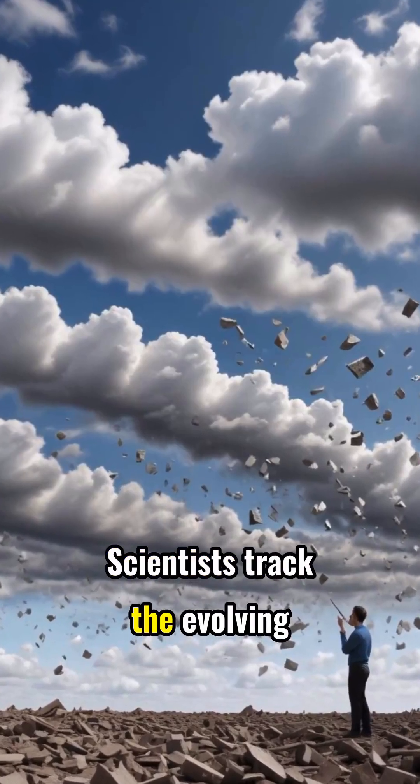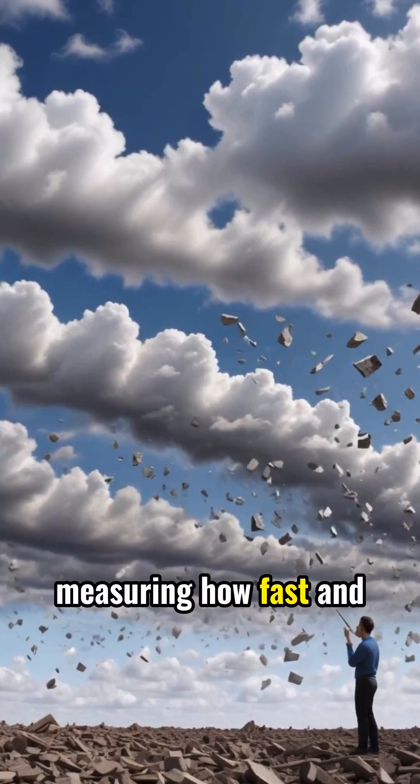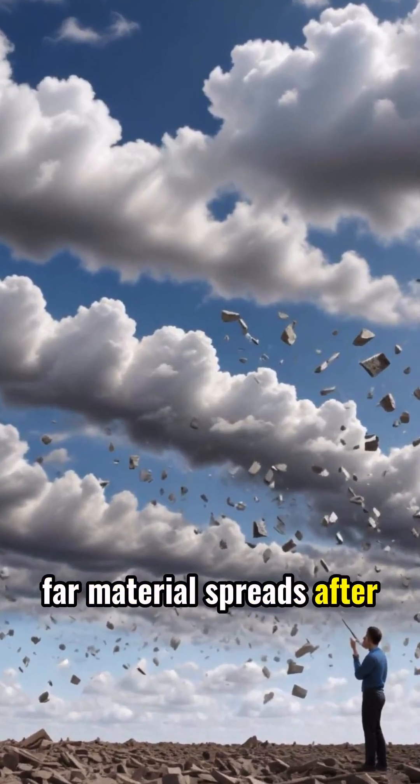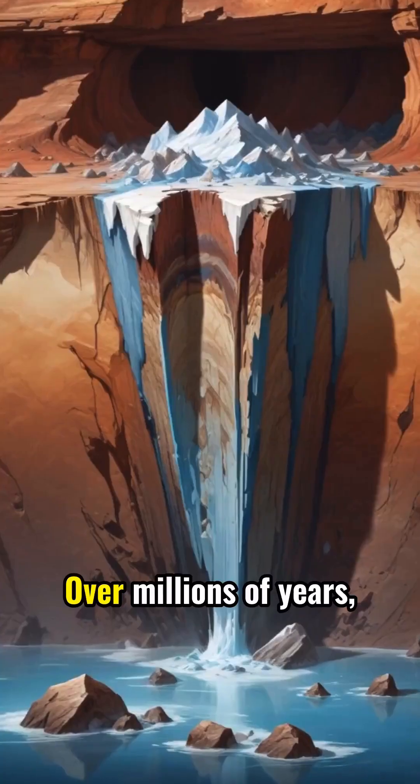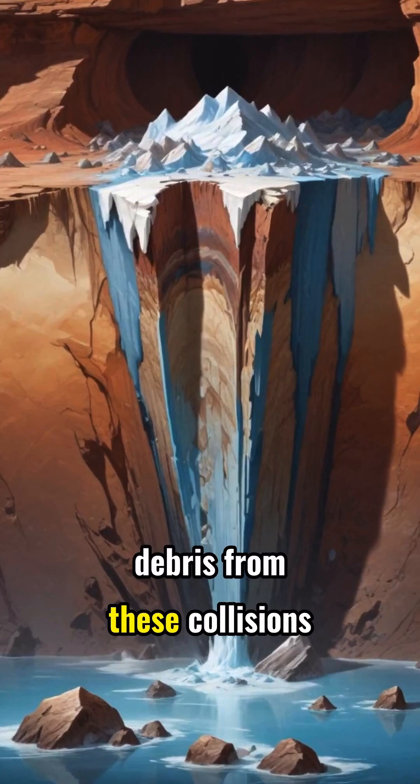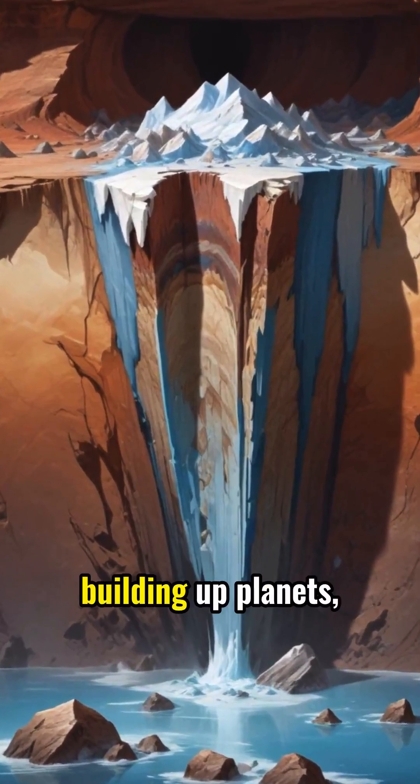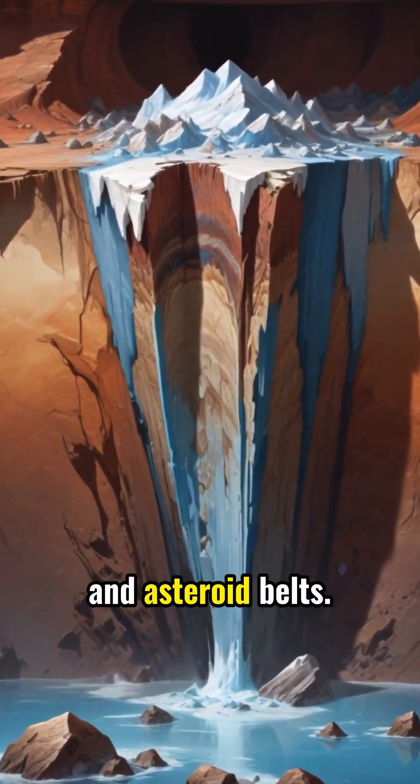Scientists track the evolving debris, measuring how fast and far material spreads after each collision. Over millions of years, debris from these collisions can coalesce, building up planets, moons, and asteroid belts.